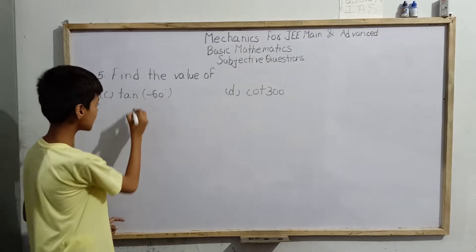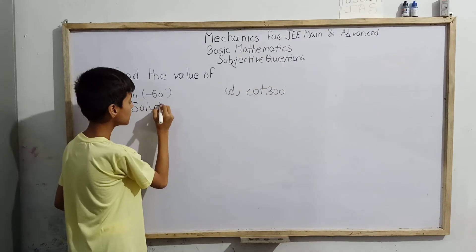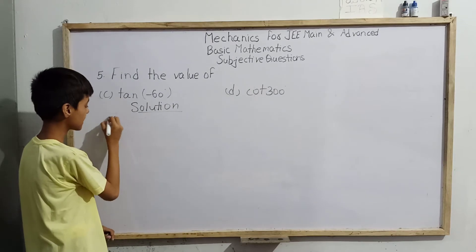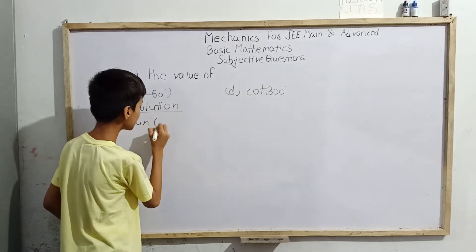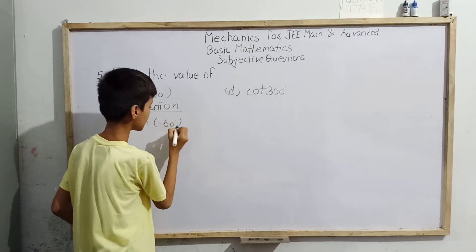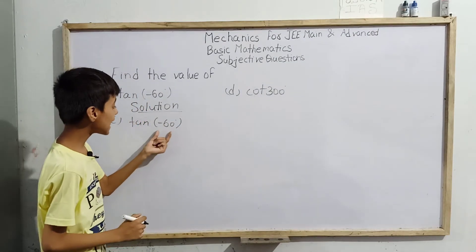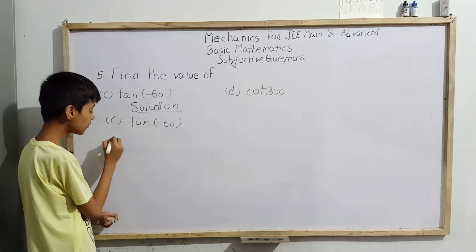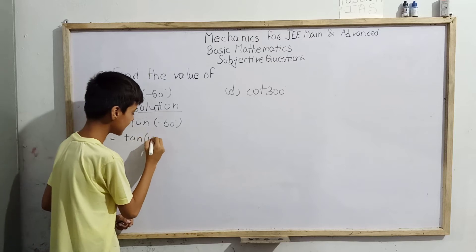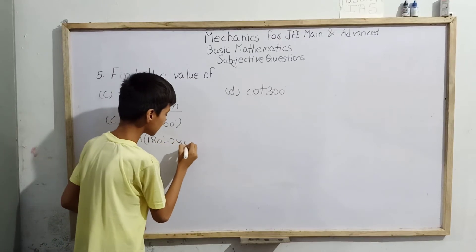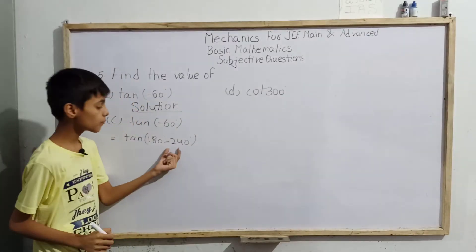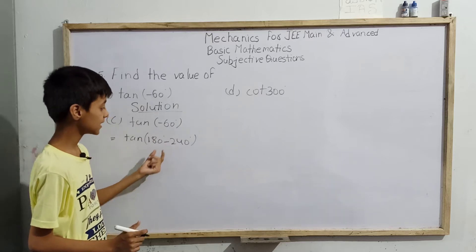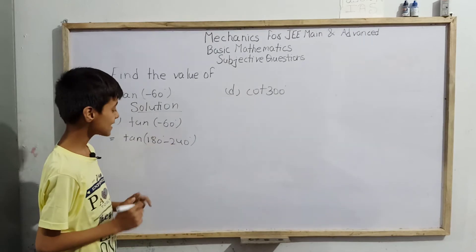Our solution starts here. First we'll solve part c: tan(-60°). The process is the same as we learned for a and b. Now, how can we write tan(-60°) in terms of 180°? We can write it in the form tan(180° - 240°), because if we add -240° to 180° we get -60°.